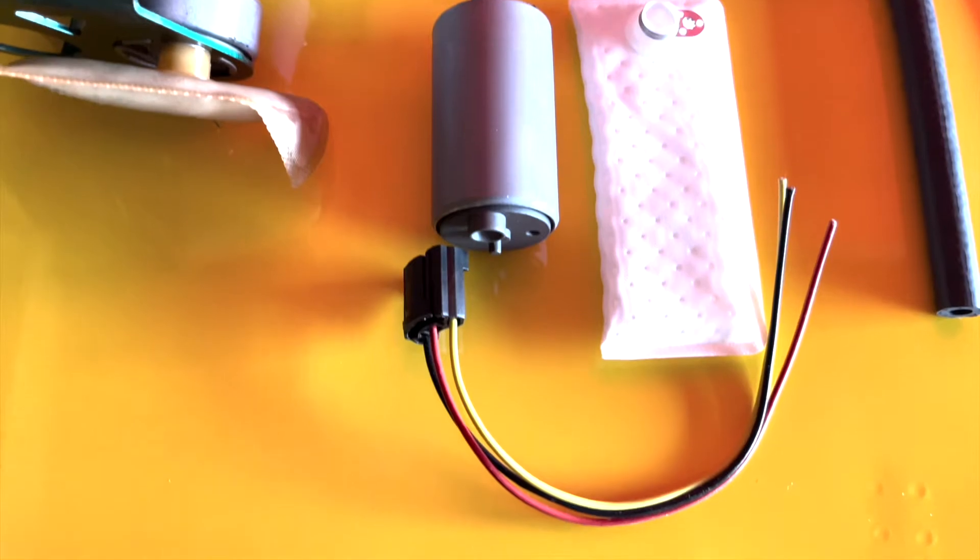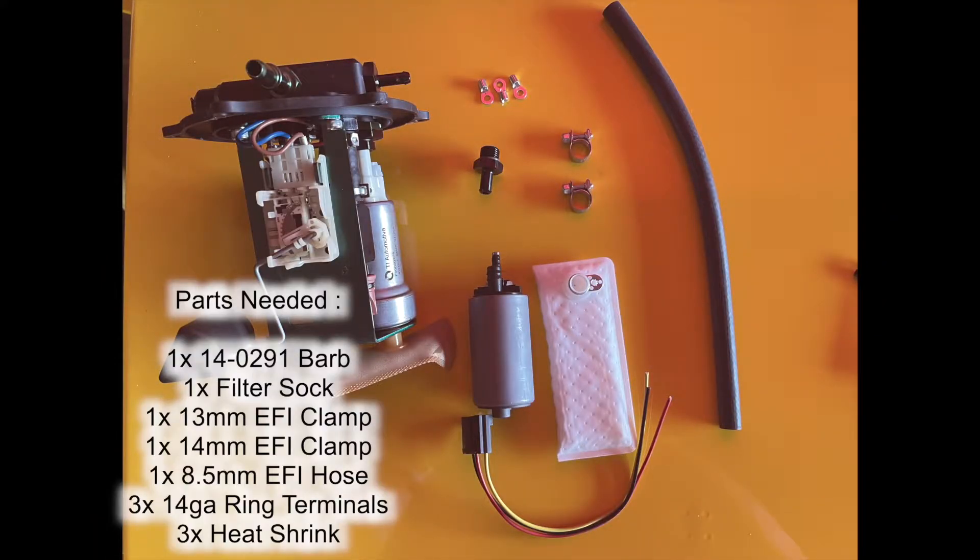Here are the parts you will need. You will need one 14-0291 barb, one filter sock, one 13mm EFI clamp, and one 14mm EFI clamp.